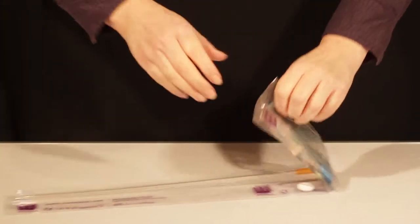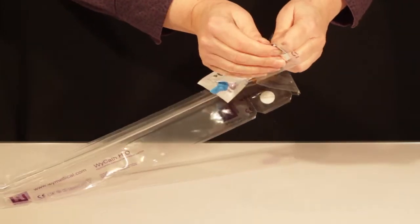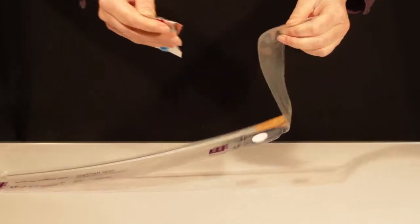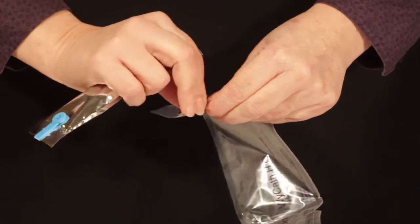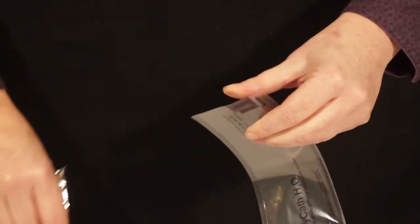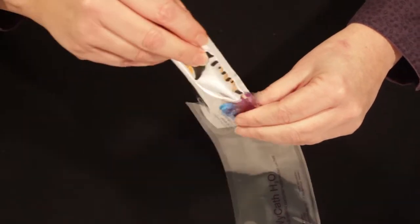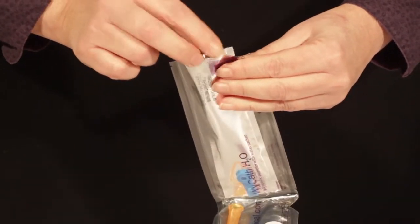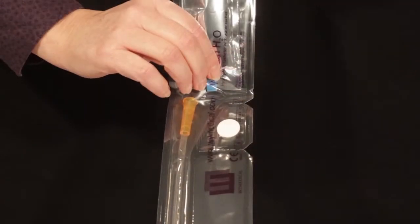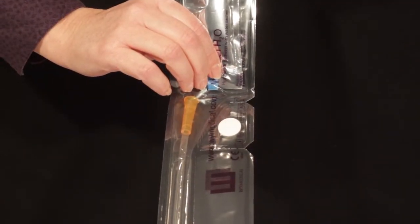Peel the water sachet from the sleeve. Tear the top of the sleeve and insert the water sachet with the blue button downwards towards the catheter. Press the blue button to pierce the water sachet.